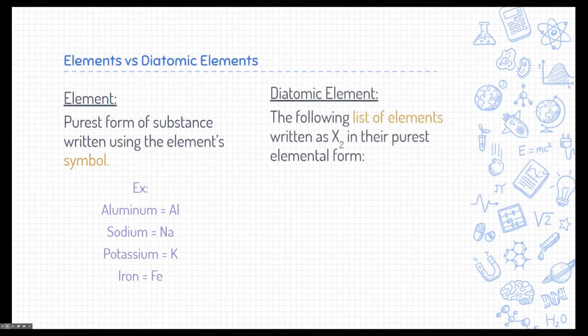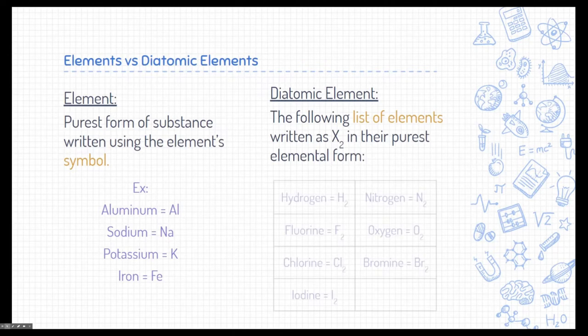How does an element differ from a diatomic element? A diatomic element is a specific list of elements that we can't just write their symbol as is — we have to include a little subscript 2 when they're written in their purest form. These are those diatomic elements, and this list is also found on your periodic table: hydrogen, nitrogen, fluorine, oxygen, chlorine, bromine, and iodine. When they're in their purest elemental form, we include a little subscript 2.